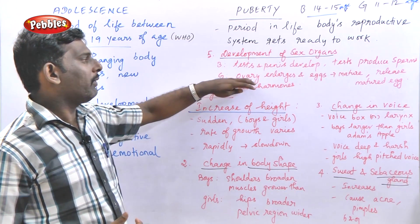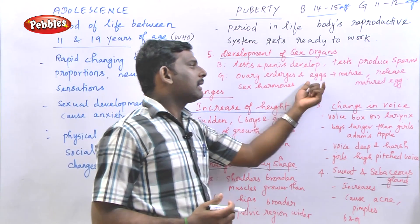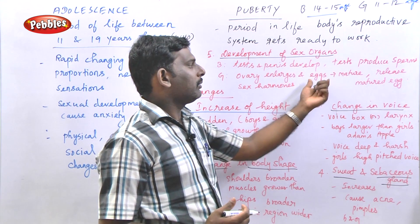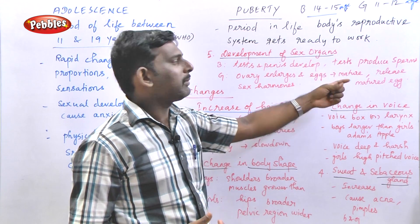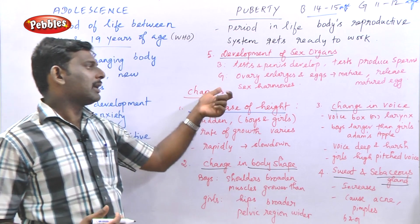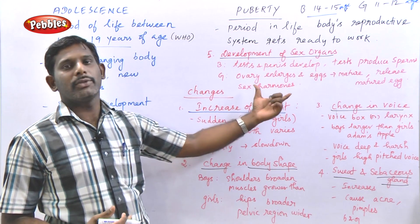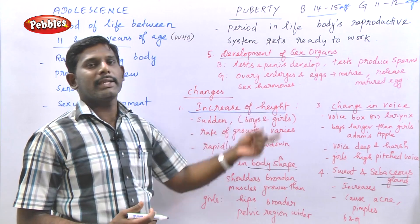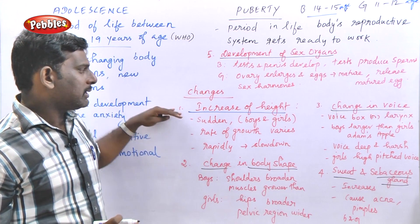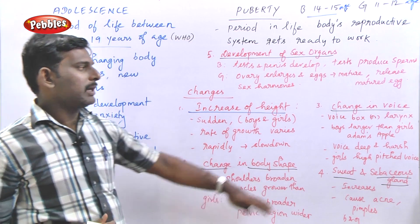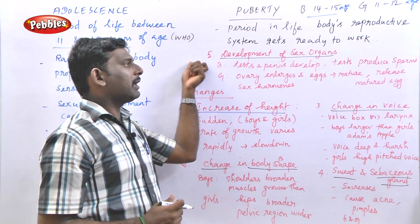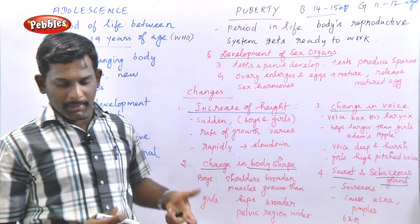So, in the puberty period, these five changes occur: increase in height, change in body shape, change in voice, increase in sweat and sebaceous glands, and development of sex organs. These are all primary changes that occur during the puberty stage. Next, we will see secondary sexual characters.